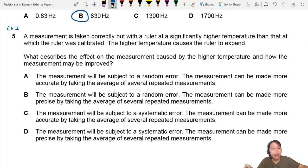A measurement is taken correctly, but with a ruler at a higher temperature than which the ruler was calibrated. So maybe you have a metal ruler, and then suddenly you take measurement at a very hot place. The ruler probably has expanded. And that's the problem here. The ruler has expanded means your scale is off.